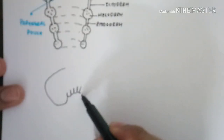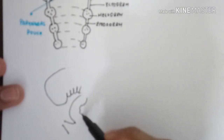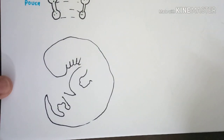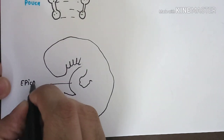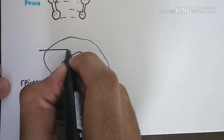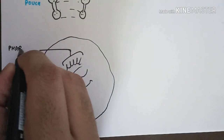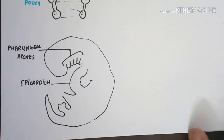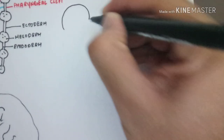Now let's see exactly where this is located in the body. It is located in the cervical region, which is why it's called the pharynx — such as the mesopharynx or oropharynx. In the developing fetus, this is the epicardial bulge, and just above it are the pharyngeal arches. The epicardium is where the heart of the fetus is located.